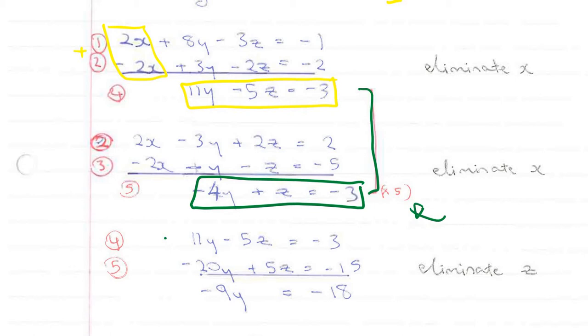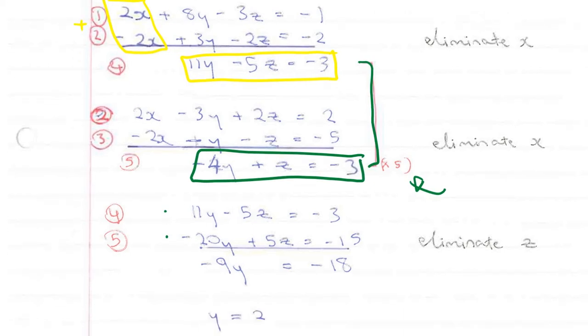And this leaves me with this equation here. Adding the two together, I am left with minus 9y is equal to minus 18, and therefore, y must be equal to 2.